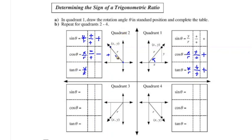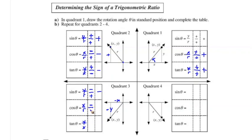For the tangent ratio in quadrant two, we have a positive y over a negative x, so positive divided by negative gives a negative tangent. In quadrant three, the y value is negative and the x value is also negative. So sine (negative over positive r) is negative, cosine (negative over positive r) is negative, and tangent (negative y over negative x) gives a positive result.